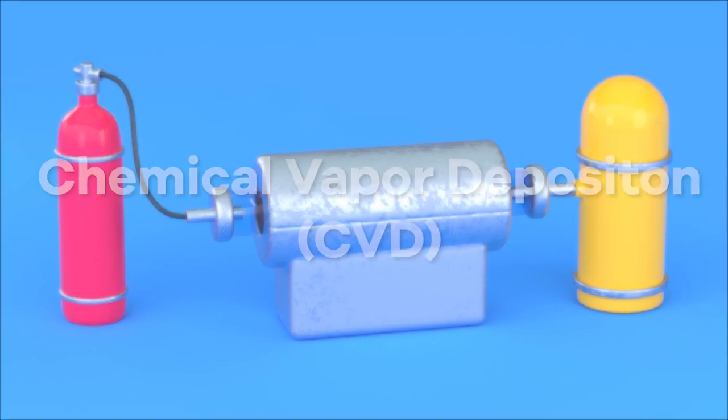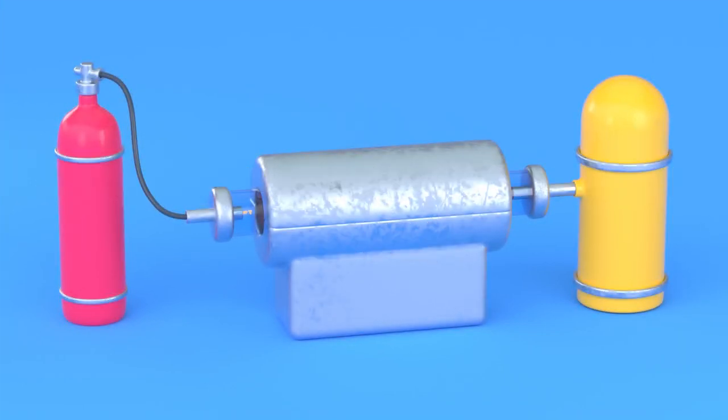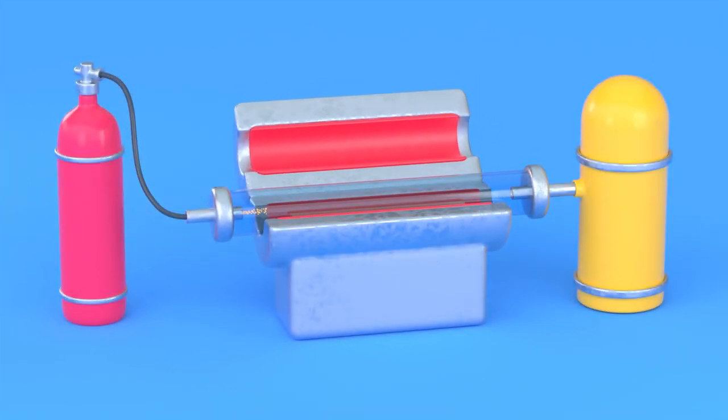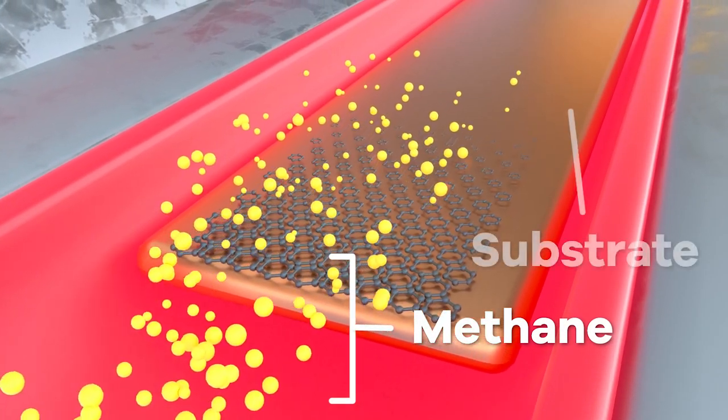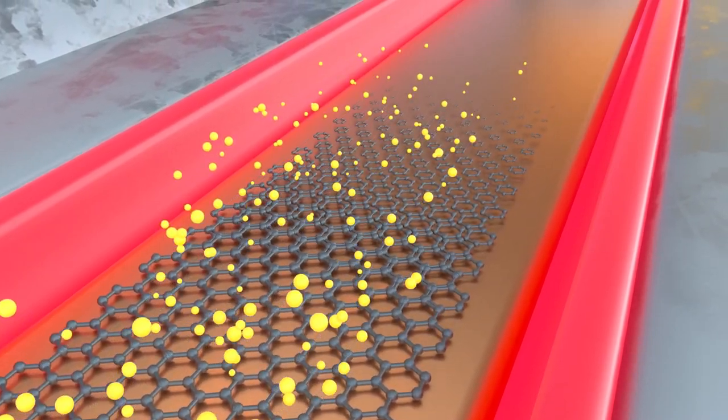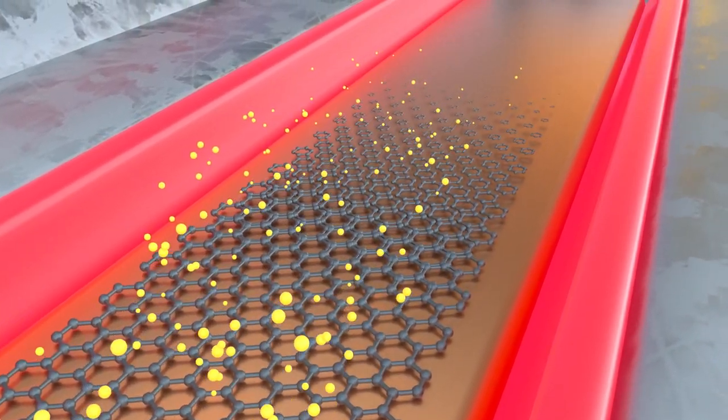Using a method called chemical vapor deposition can produce a larger amount of graphene. A gas such as methane is put into a closed container onto a substrate such as copper. It is heated until a layer of graphene is formed on the substrate.